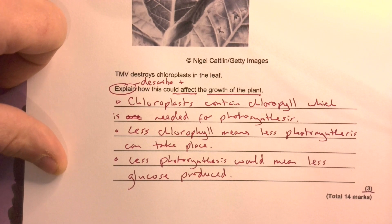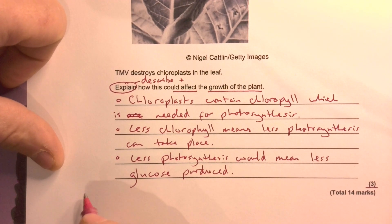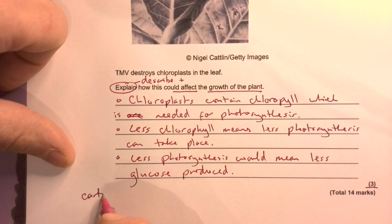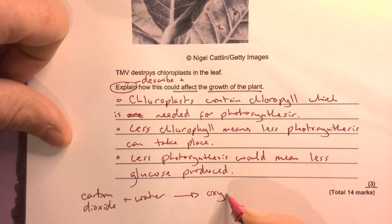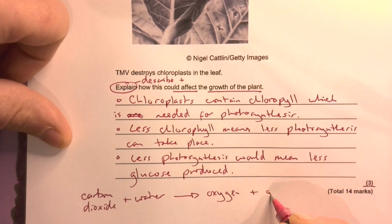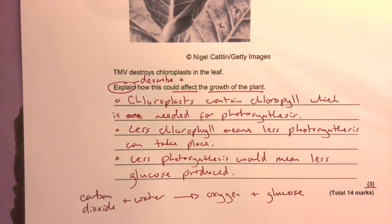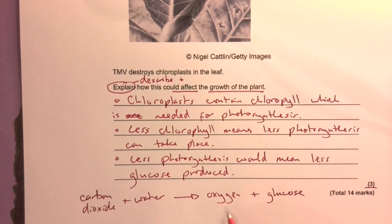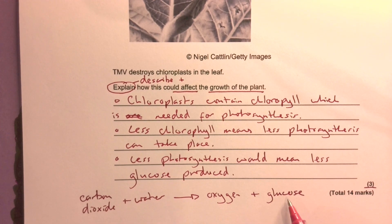This is a chance to show off — I'm confident about photosynthesis, so I want to make sure the examiner knows that. I know that carbon dioxide plus water turns into oxygen plus glucose. I'm going to write down the equation for photosynthesis as well. Remember, this equation is just the same as respiration only backwards — the arrow goes the other way for respiration. Plants use photosynthesis to make glucose, which they then use in respiration.